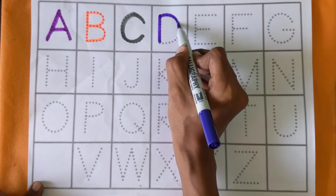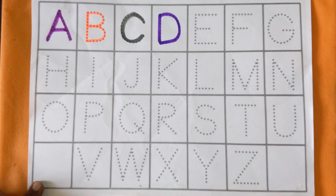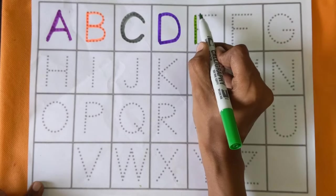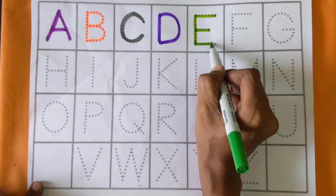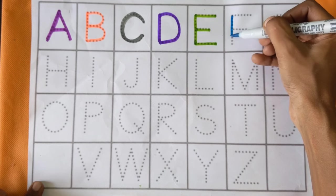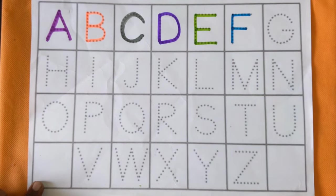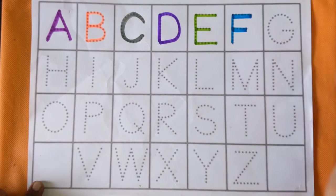After C, next alphabet is D. D for doll and D for deer, violet color. It's E. E for eggs and E for eggplant, light green color. After E, next is alphabet F. F for fish and F for father, sky blue color.